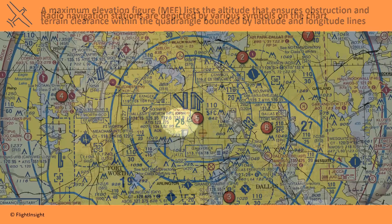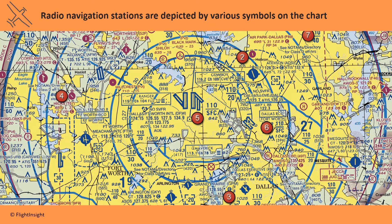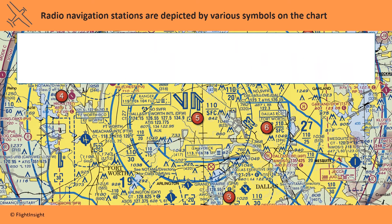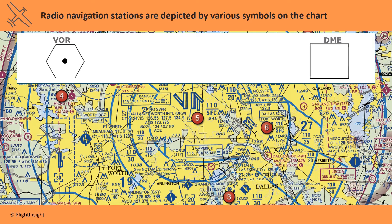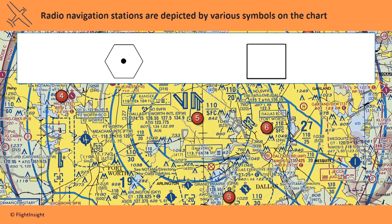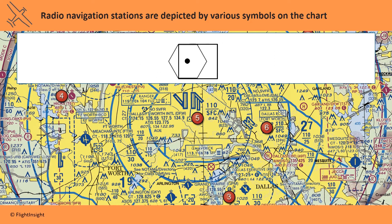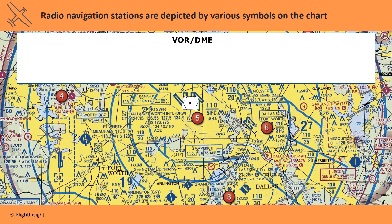Radio aids to navigation like VORs and DMEs use transmitting stations which are shown on the charts. The VOR symbol is a hexagon, while the DME symbol is a square. A station that combines a VOR and DME will combine the two symbols on the chart, as you see at DFW airport in Texas.